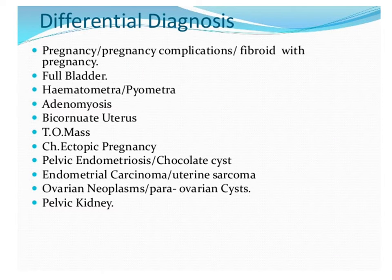For differential diagnosis, the first and foremost thing to differentiate from a fibroid is pregnancy — whatever we do, we must differentiate it from pregnancy, since fibroids can sometimes reach sizes that resemble a normal pregnancy, but fetal heart tones and fetal parts are not present. A full bladder is another consideration. Hematometra or pyometra is a third option.